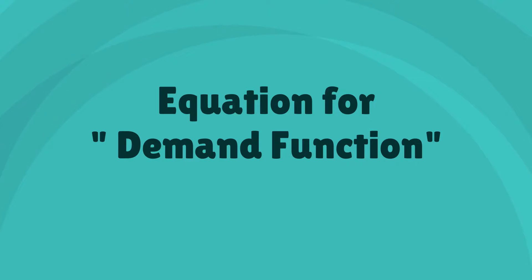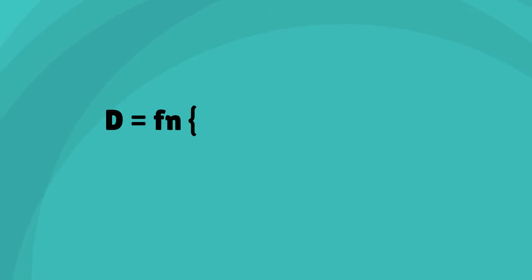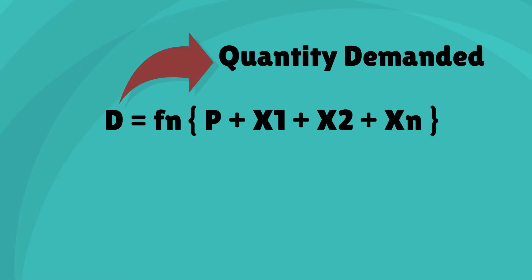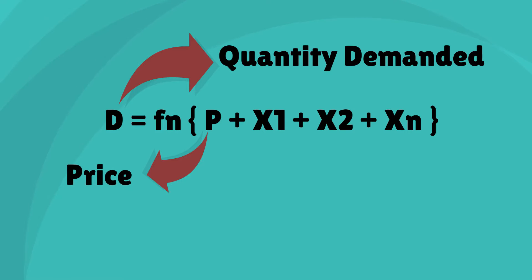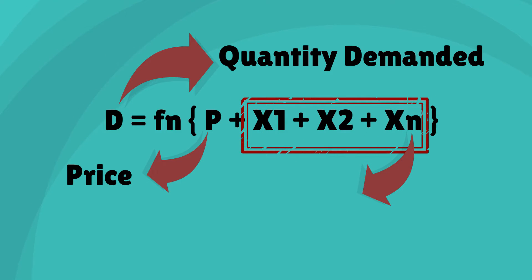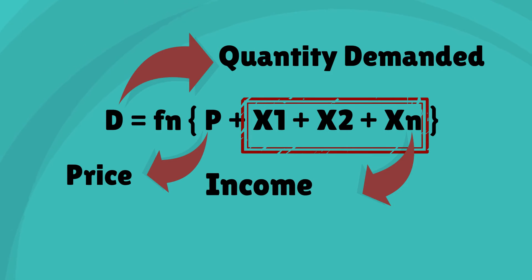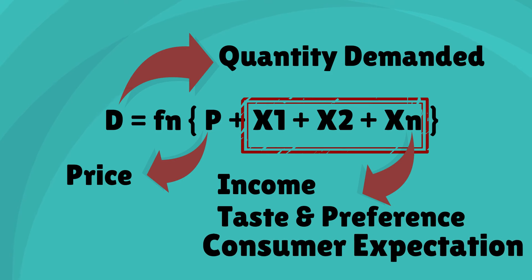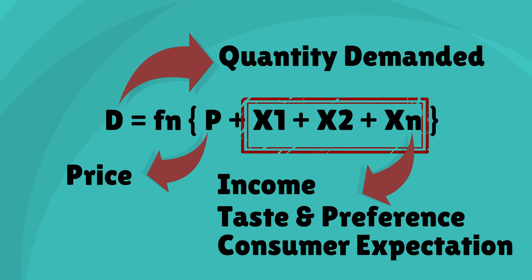The demand function is expressed as: D = f(P, X1, X2, ... Xn), where D is the quantity demanded, P denotes the price of the commodity, and X1, X2 up to Xn denote the various determinants of demand, such as income, taste and preferences, consumer expectations, etc.